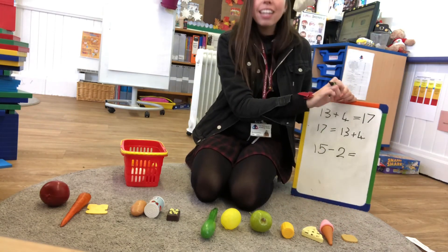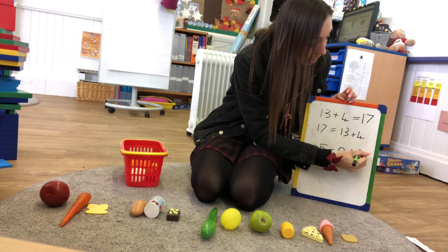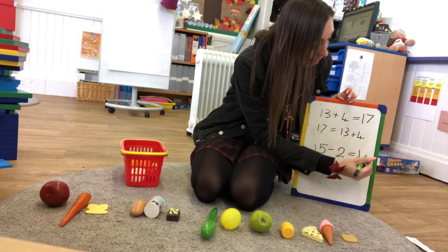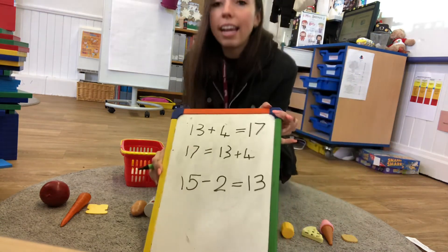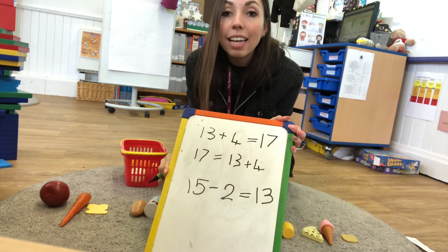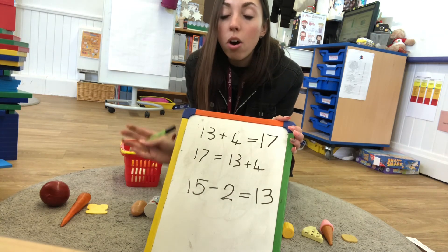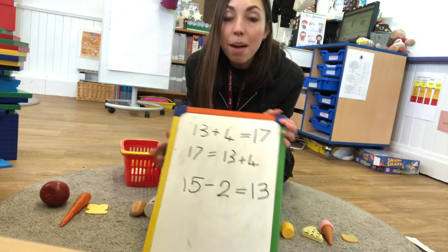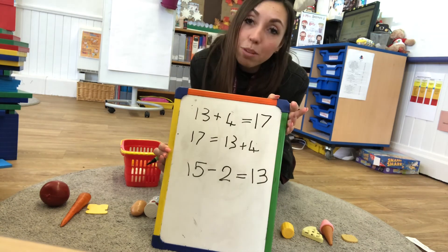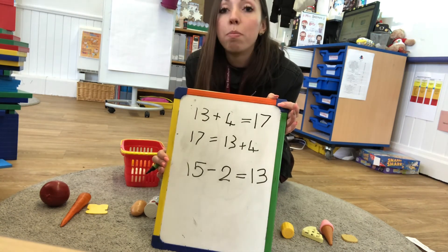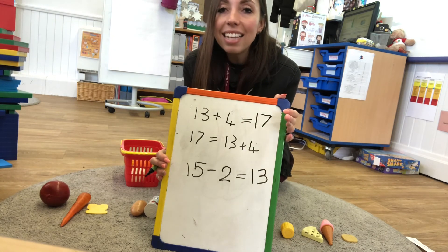When I had 15 and I took two away, I was left with 13. So 15 take away two is the same as 13. On the slides, I'm now going to put two more equations for you — one addition and one subtraction — and you can have a go using your objects. Have a lovely day guys, see you later.